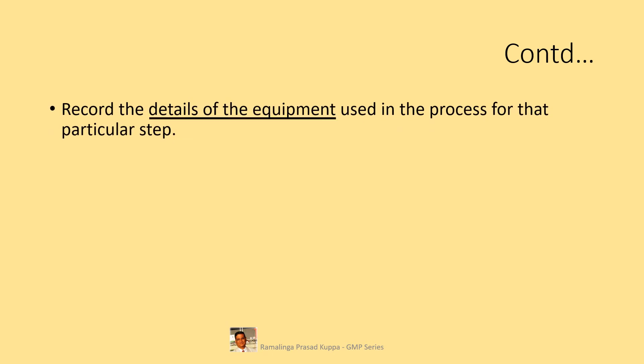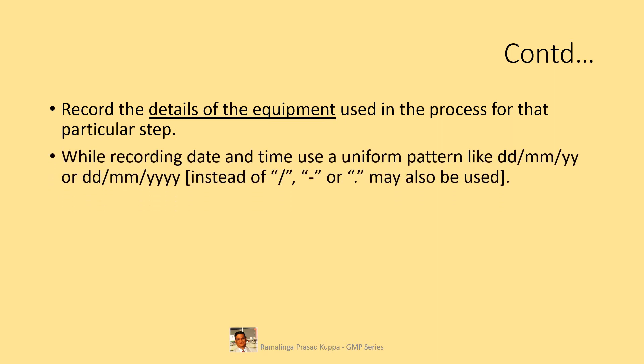Record the details of the equipment used in the process for that particular step — you can tick mark the equipment used if there is already a provision in the BPR. While recording date and time, use a uniform pattern like DD/MM/YY — a slash, hyphen, or dot may also be used. Use any format, but make sure all use the same pattern — this gives a uniform and aesthetic look to the document.